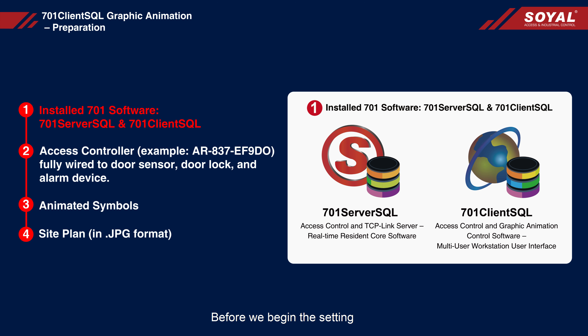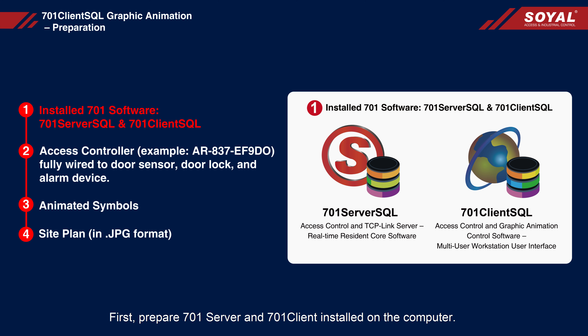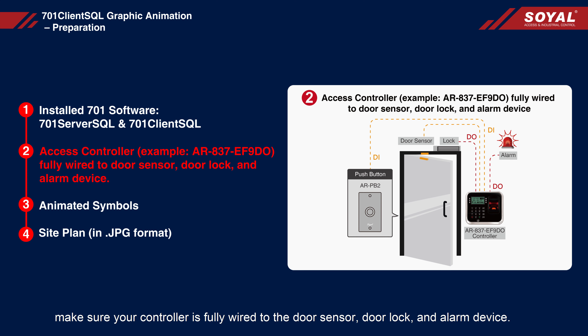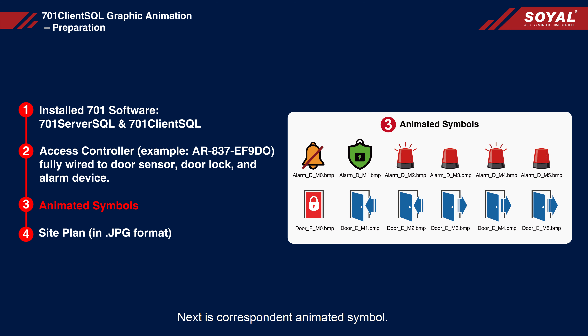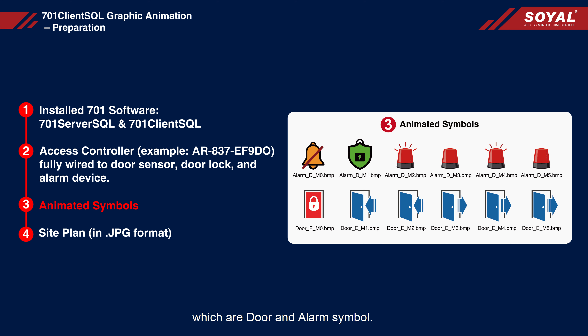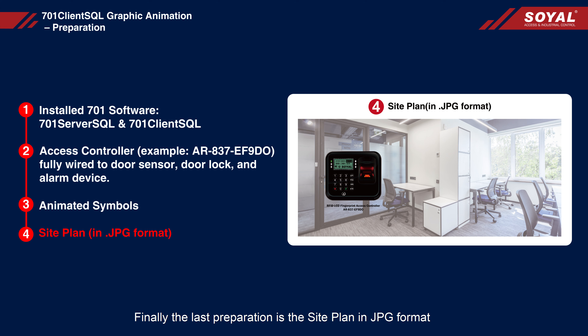Before we begin the setting, there are 4 steps of preparation that need to be done. First, prepare 701 server and 701 client installed on the computer. Second, make sure your controller is fully wired to the door sensor, door lock, and alarm device. In this part, we are going to use the Soyal demo kit to show you the real test. Next, you need the corresponding animated symbols — for each access controller, we need 2 different kinds of symbols, which are door and alarm symbols. Finally, the last preparation is the site plan in JPG format, which is required as the base map for the animated symbol.